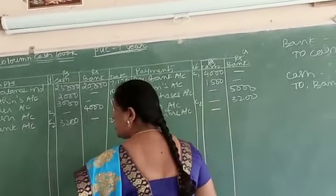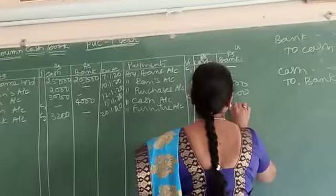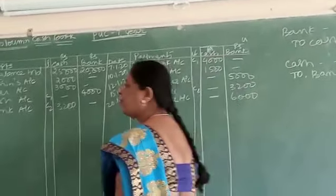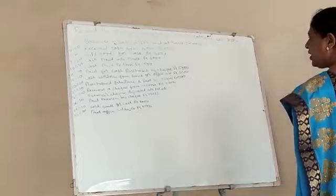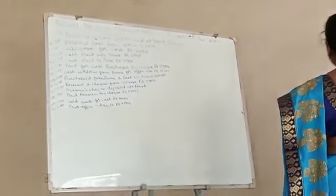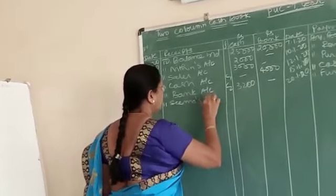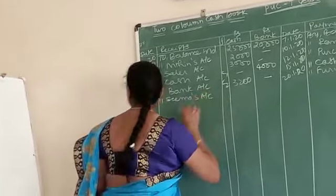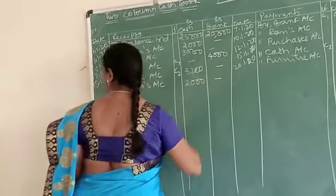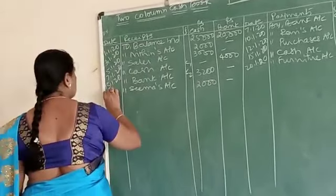Write in the bank column 6,000. Next, they have told you: receive the check from SEMA. You are receiving the check, deposited into bank. Write the date, SEMA account. Whenever you receive a check, it is cash. Come to the debit side, 2,000. Write it in the cash column and the date is 21st.